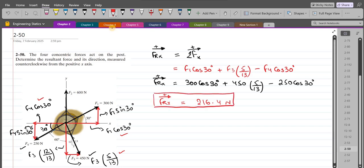Since we are getting a positive answer, it means FRx is directed in the positive x-axis towards the right-hand side.